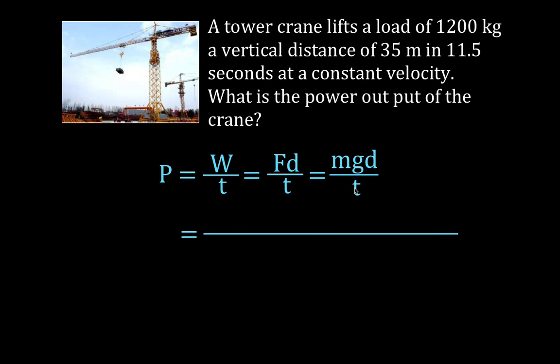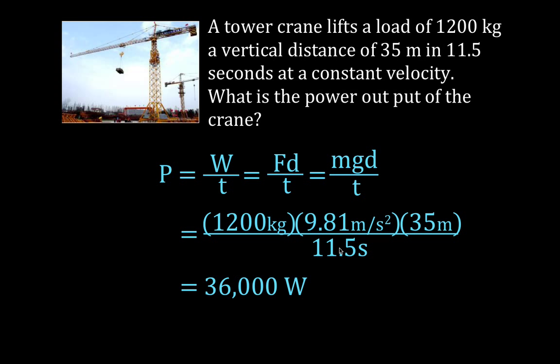Let's do that right now. Now, the mass is 1,200 kilograms. The acceleration due to gravity is 9.81 meters per second squared. The distance we're lifting the object is 35 meters, and the time is 11.5 seconds. If we multiply these three values, divide by the time, we get that the power output of that crane is approximately 36,000 watts.